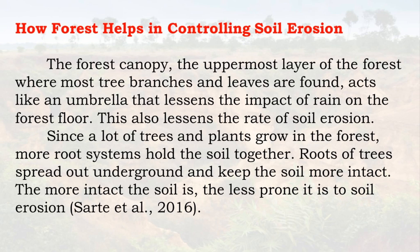The forest canopy — the uppermost layer of the forest where most tree branches and leaves are found — acts like an umbrella that lessens the impact of rain on the forest floor, reducing soil erosion. Since many trees and plants grow in the forest, more root systems hold the soil together. Roots of trees spread out underground and keep the soil intact — the more intact the soil is, the less prone it is to soil erosion.